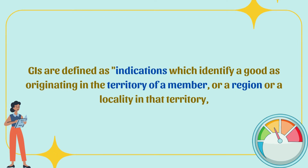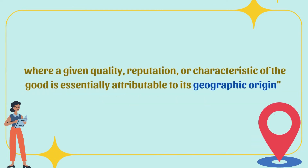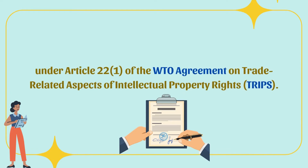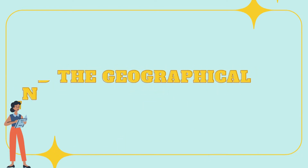GIs are defined as indications which identify a good as originating in the territory of a member, or a region or locality in that territory, where a given quality, reputation, or characteristic of the good is essentially attributable to its geographic origin, under Article 22 of the WTO Agreement on Trade-Related Aspects of Intellectual Property Rights.